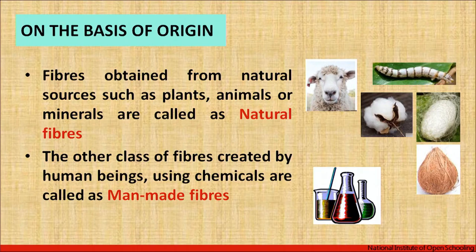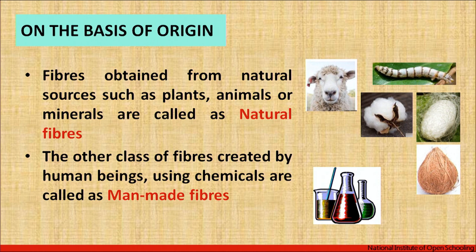Fibers are obtained from different sources. Some fibers are obtained from plant or vegetable sources, others from animal sources, and there are also mineral fibers. Fibers obtained from plant sources are known as cellulosic fibers, and fibers obtained from animal sources are called protein fibers. Mineral fibers usually come from rock mining — asbestos is an example of a natural mineral fiber. Fibers created by human beings using different types of chemicals come under the category of man-made fibers.